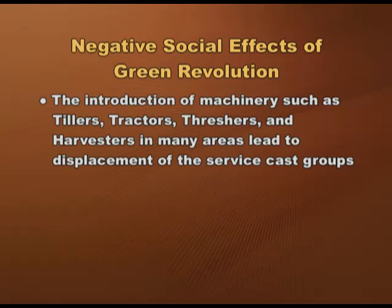Another important social consequence was that although wages and employment for agricultural workers did increase in many areas as demand for labor grew, rising prices and a shift in the mode of payment from payment in kind to cash actually worsened the economic conditions of most workers in rural areas, especially from lower caste categories and Dalits. The introduction of machinery such as tillers, tractors, threshers, and harvesters led to displacement of service caste groups who used to carry out these agricultural activities under the Jajmani system. This process of displacement also increased the pace of rural-urban migration.